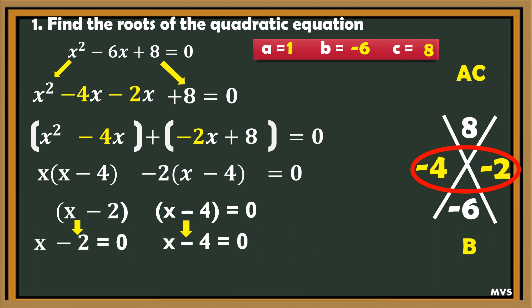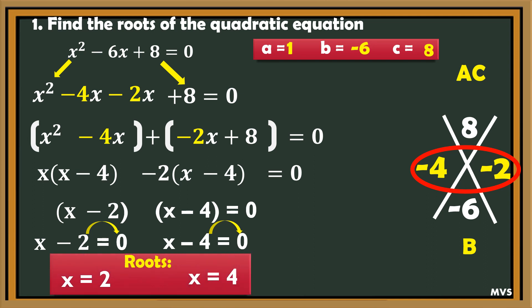Solve for x by equating the two factors to zero. We will have x minus 2 equals 0, and x minus 4 equals 0. Transpose negative 2 to the right side — so it becomes positive 2, therefore x is equal to 2. Next, x minus 4: transpose negative 4 to the right side, so x equals 4. Going back to the problem, the roots of x squared minus 6x plus 8 equals 0 are 2 and 4.